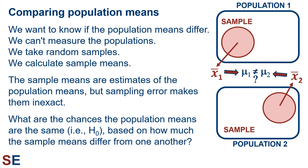The way the t-test works is by asking the question: what are the chances the population means are the same? In other words, our null hypothesis of equal means is true based on how much the sample means differ from one another. Obviously, if the sample means are almost exactly the same, that would be weak evidence that the population means are different and we would probably be fine with thinking they're the same. Likewise, if the sample means are extremely different and there isn't a lot of noise in our data, that would be better evidence that the population means are different.